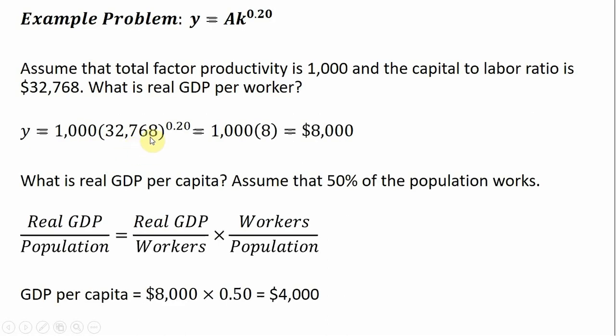Let's do an example problem. In this example problem, the output per worker production function is given as follows, where output per worker or real GDP per worker is equal to A multiplied by the capital-labor ratio, which is raised to the 0.2 power.